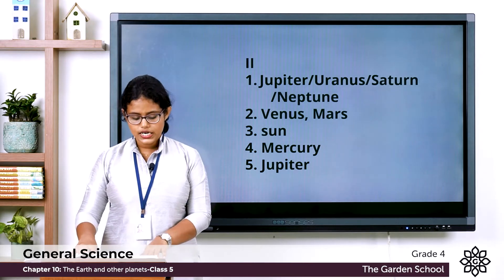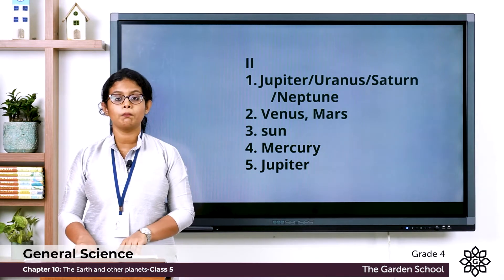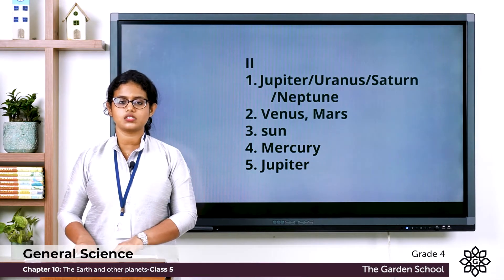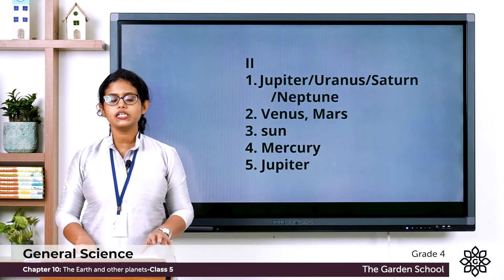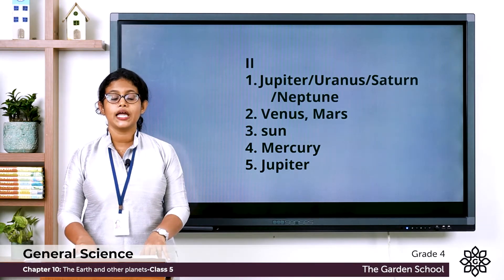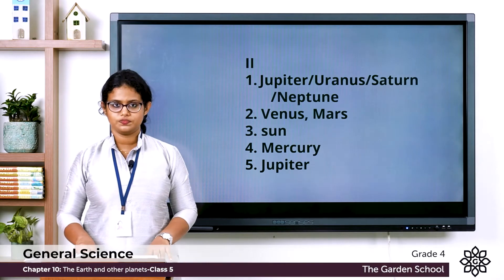Fifth one: Dash is the biggest planet in the solar system. The biggest planet in the solar system is Jupiter.